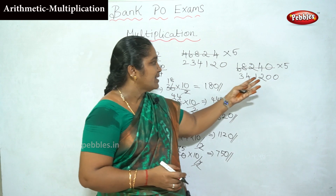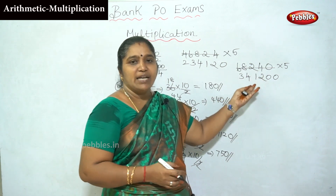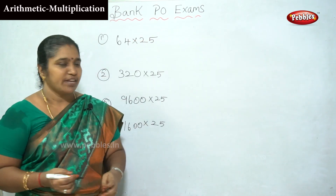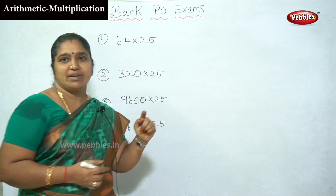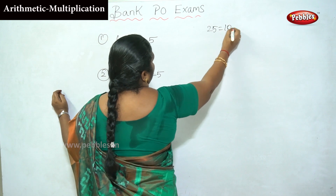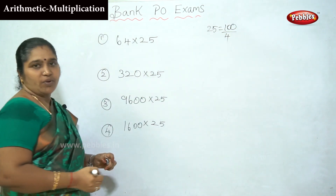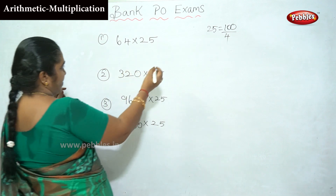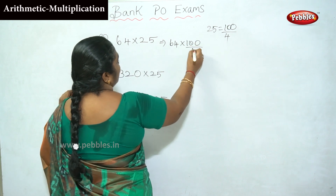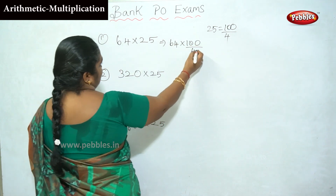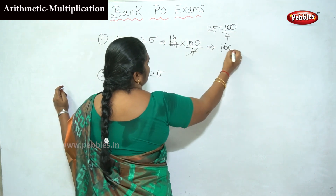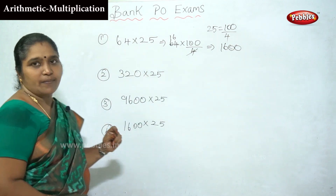How do we multiply 5 by 25? We use 25 equals 100 divided by 4. For example, 64 into 25: 64 into 100 divided by 4. The 4 table is easy. Answer is 1600.